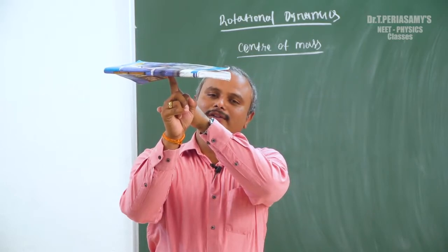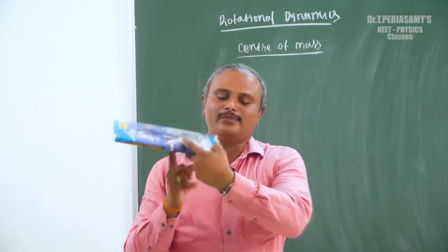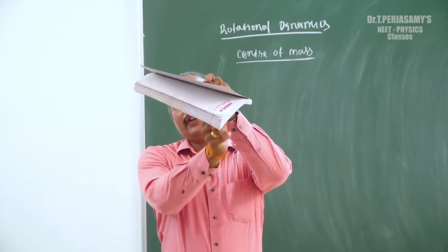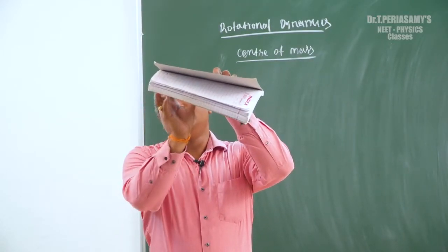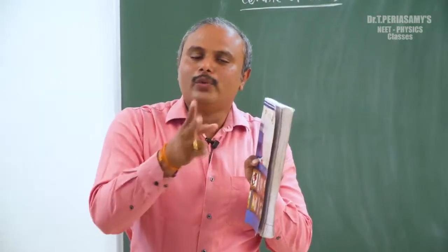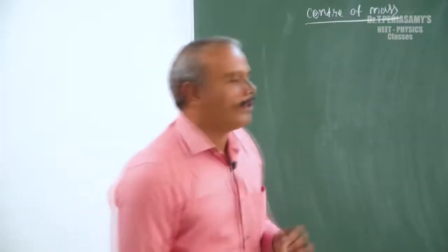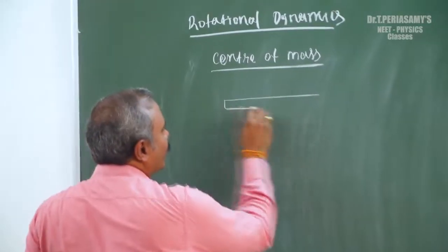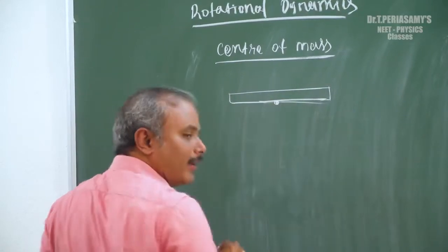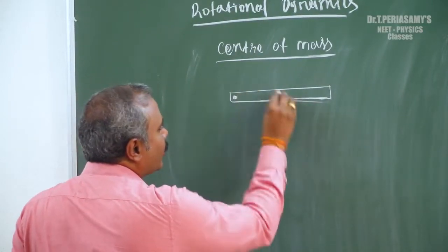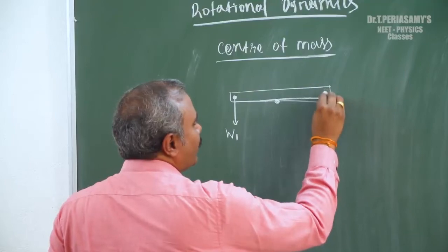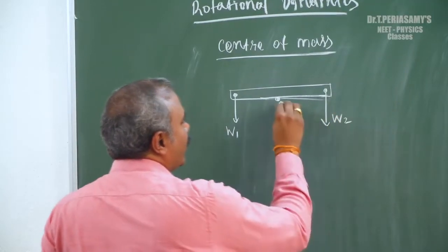At the center of mass point, the weight acts on one side and the weight acts on the other side. If you create a moment on one part of the weight, the other part will be nullified and equalized. That pivot point is the center of mass. In the total system, we have weight W1 and weight W2 acting at distances from the center.